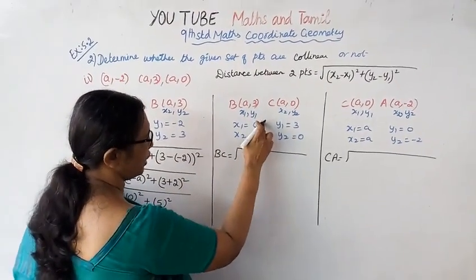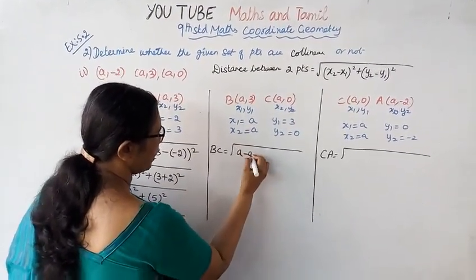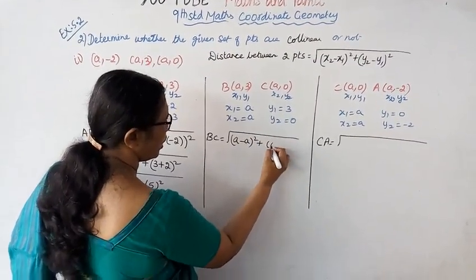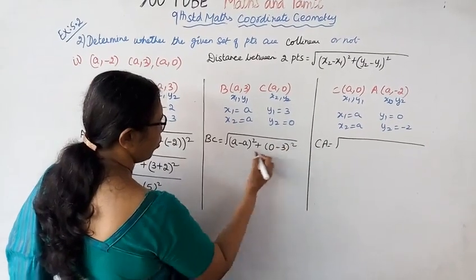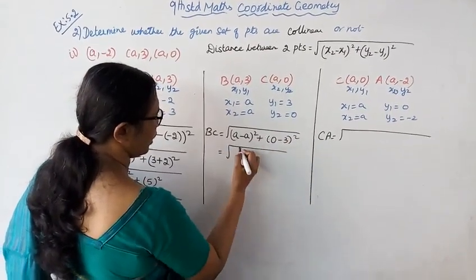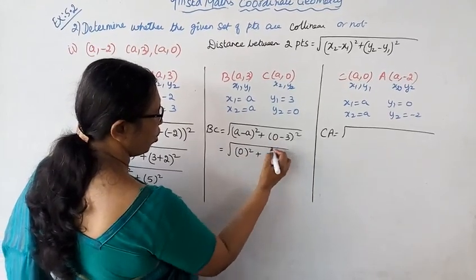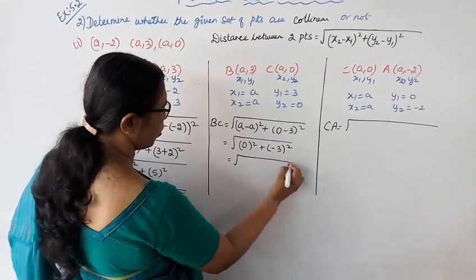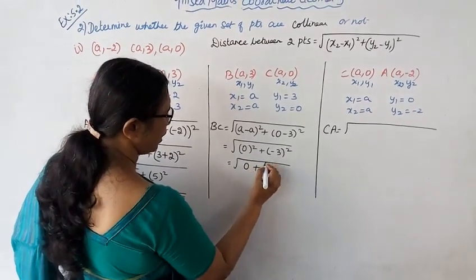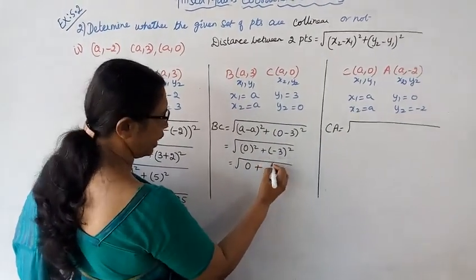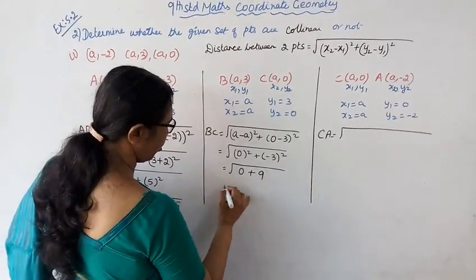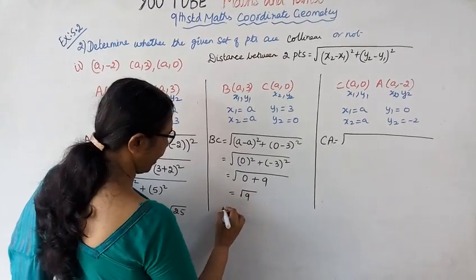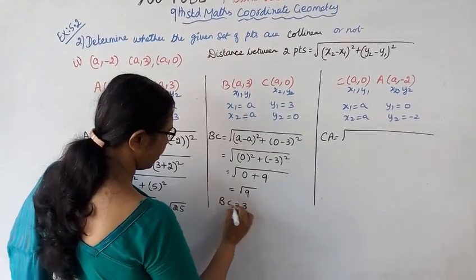For distance BC: (x2 minus x1) whole square plus (y2 minus y1) whole square. That is (a minus a) 0 whole square plus (0 minus 3) whole square. That equals 0 plus minus 3 whole square, which is 9. Square root of 9 equals 3. So BC equals 3.